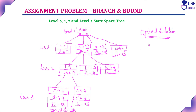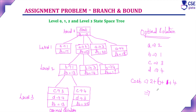The optimal solution is: assign job 2 to person A, job 1 to person B, job 3 to person C, and job 4 to person D. The total cost is 13, which is the least lower bound value for this problem. This is the complete procedure for solving the job assignment problem using the branch and bound technique, explained step by step for better understanding.